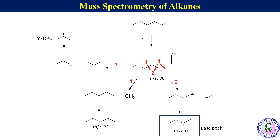This peak at m/z 43 is found to be the base peak — that is, it has the highest intensity. The reason is purely statistical: this carbocation can be formed by breaking of both the C2–C3 and C4–C5 bonds, giving it higher abundance compared to the prop-2-yl carbocation with m/z 43. That's all for this video. Please subscribe to my channel and press the bell icon if you liked this video. Thank you very much for watching.